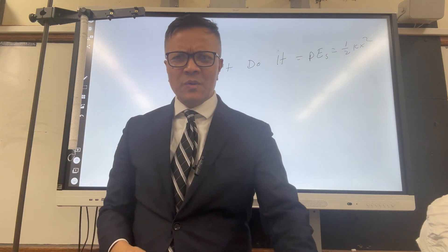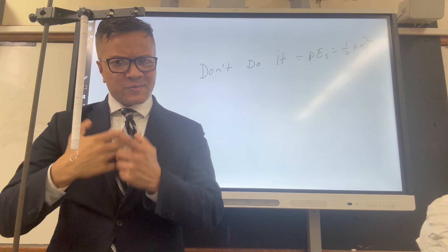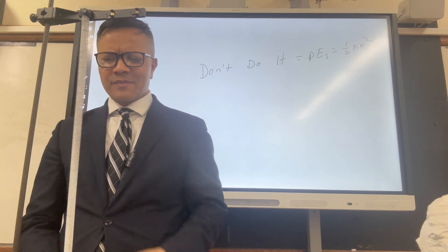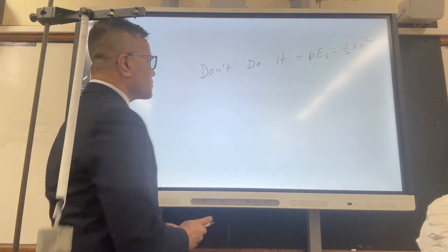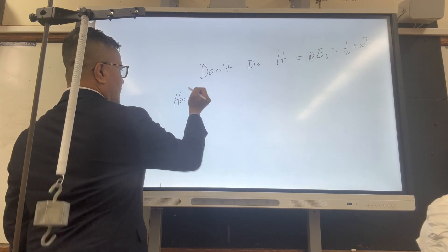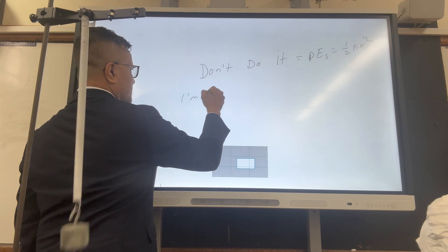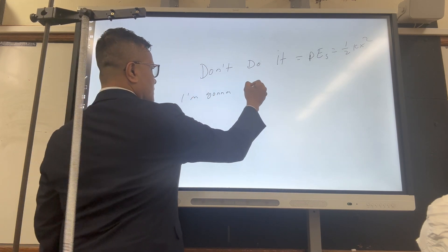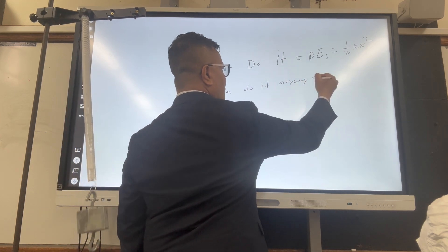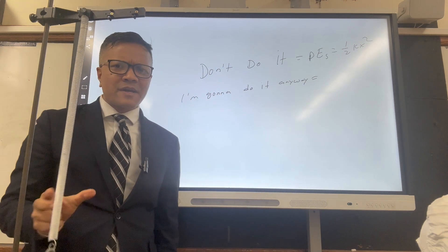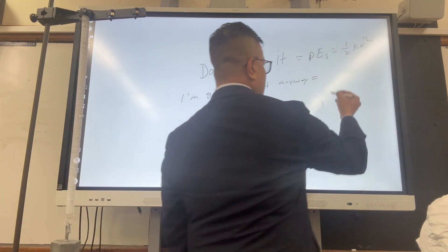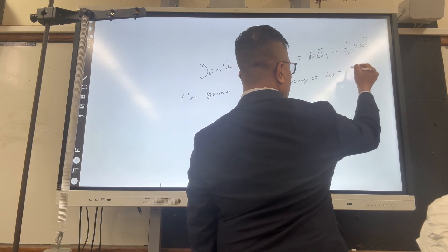But you're going to say, I'm going to do it anyway. So how are you going to convert that to a math equation? Well, very simple. You're going to convert it to a math equation using W is equal to F times D.